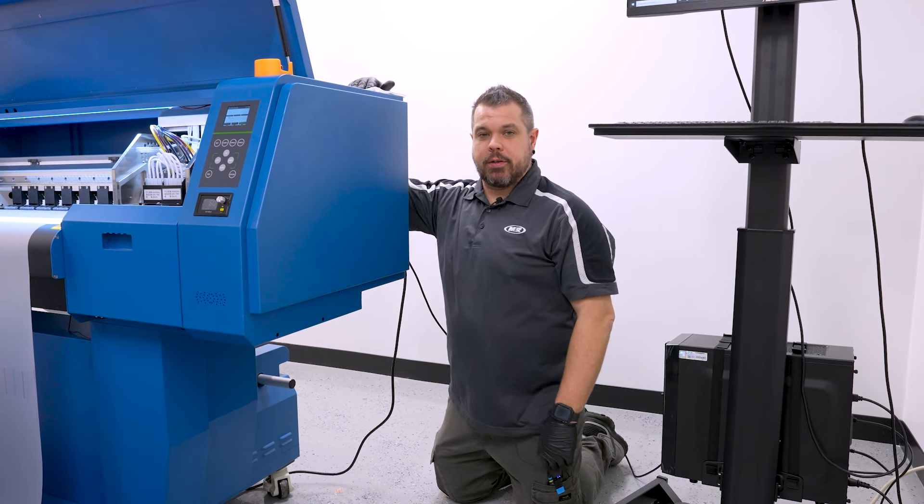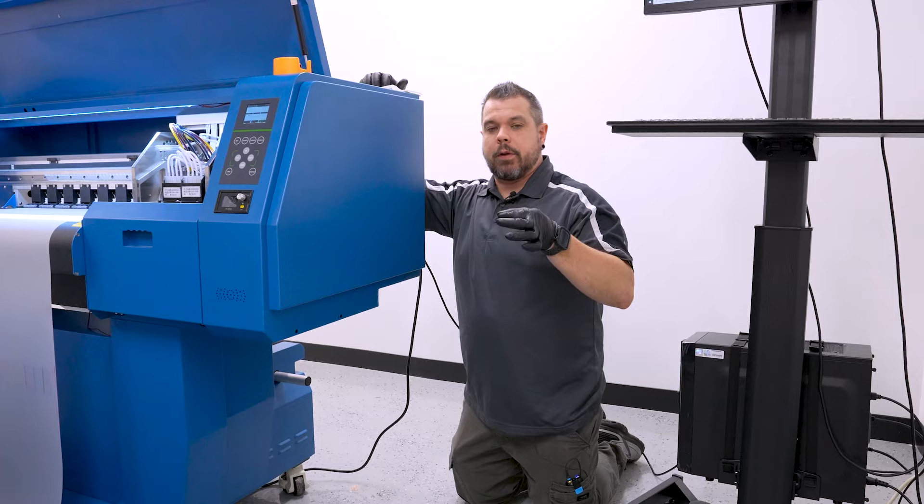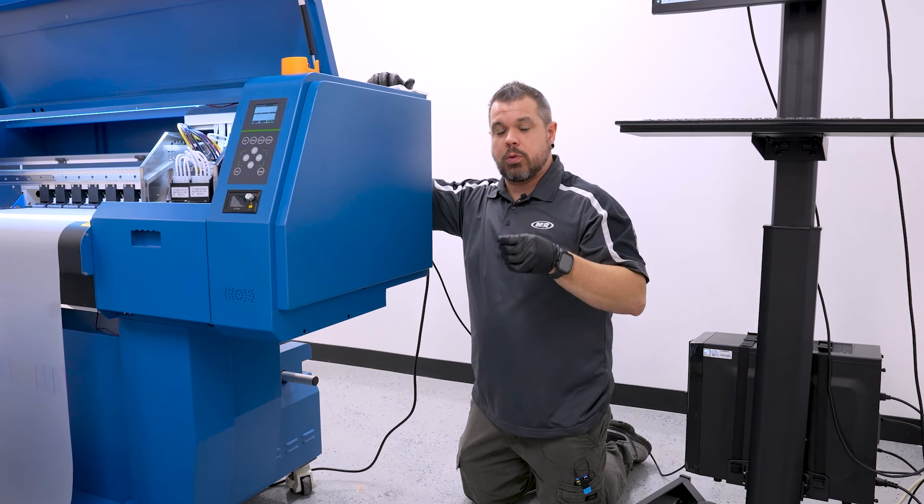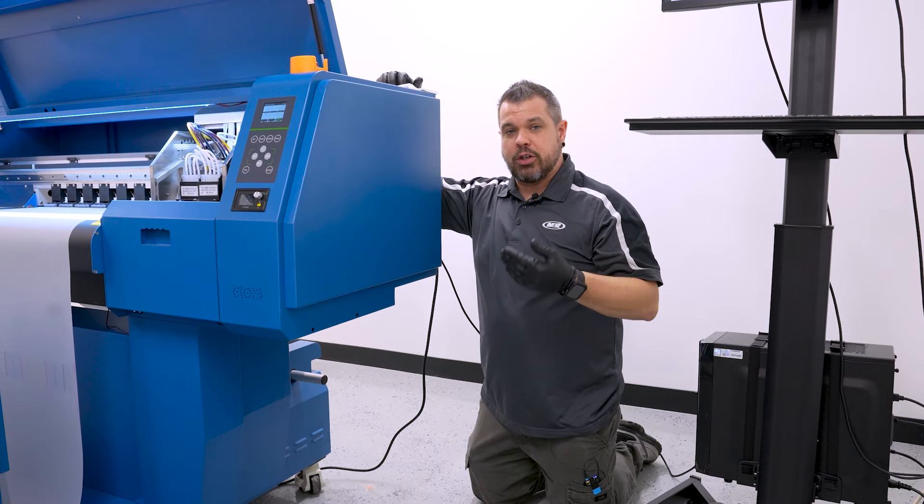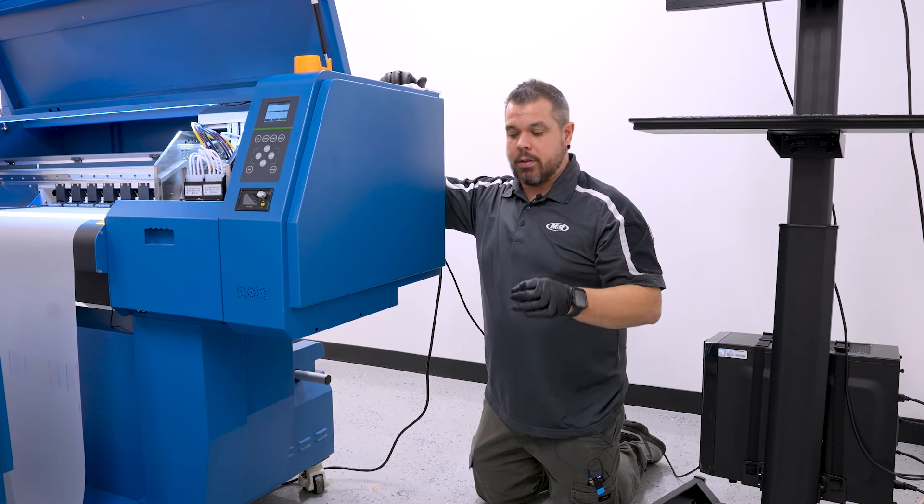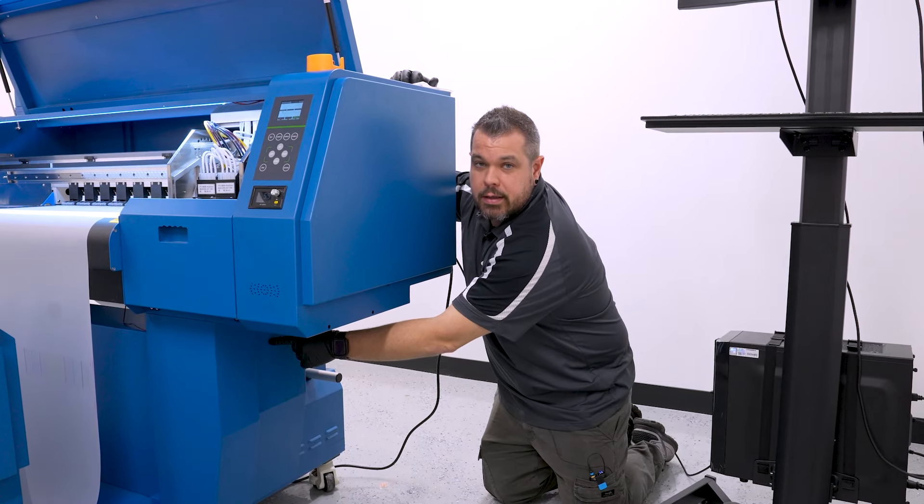So inside your waste tank, there is going to be a float sensor, and as your ink levels rise up, the float sensor is going to slide up, and when it gets to a certain point, you're going to know your waste tank is full because you're going to get an audible and a visual alarm off a sensor that is located inside your cubby hole right here where your waste tank is located.